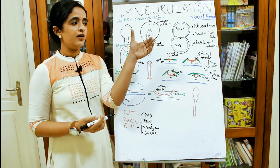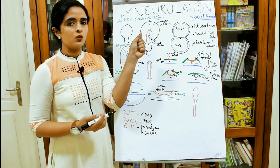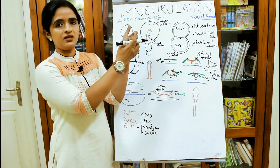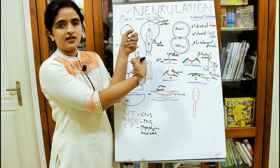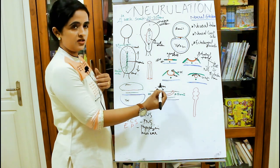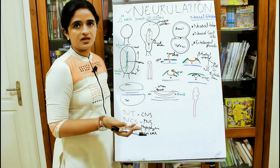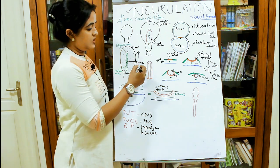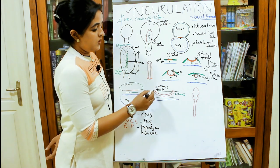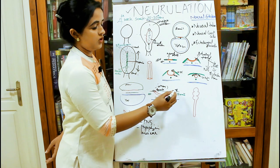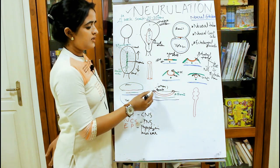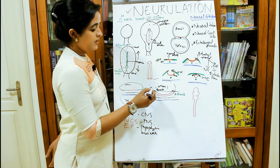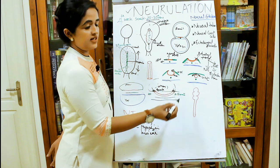The neural tube doesn't close all at once — it starts in the cervical region and extends toward the cranial and caudal regions. While fusing, it maintains communication with the amniotic cavity at both ends, because blood vessels are not yet well developed. This communication nourishes the neural tube cells: amniotic fluid enters through the pores and sustains the neural tube until blood vessels are established.